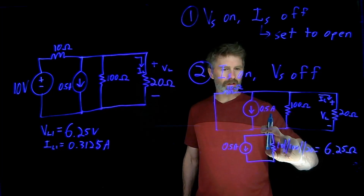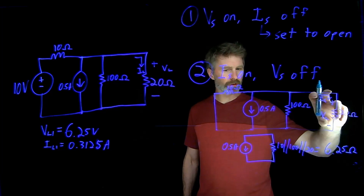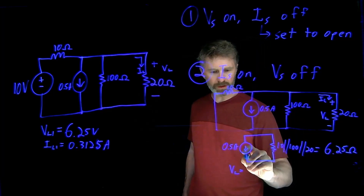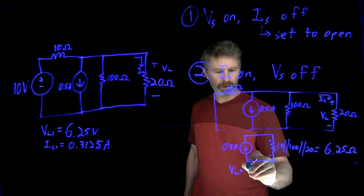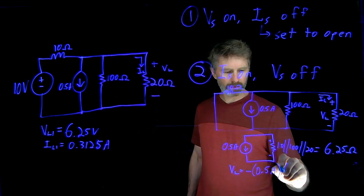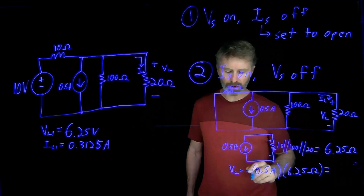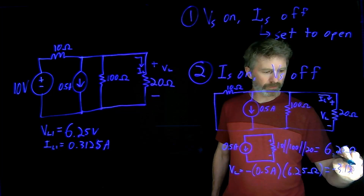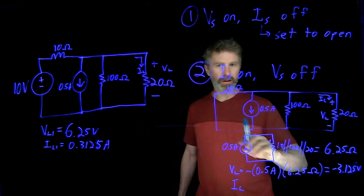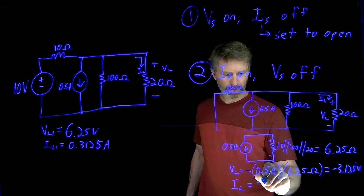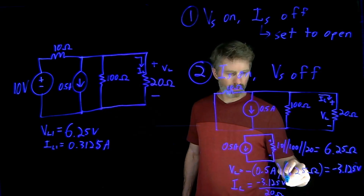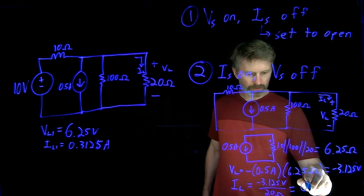This parallel combination includes the 20 ohm resistor, so whatever voltage we calculate across this parallel combination is the voltage across the 20 ohm load resistor. The polarity is defined one way, but our current source is going the other way, so VL2 equals negative 0.5 amps times 6.25 ohms, which works out to negative 3.125 volts. The current direction is also reversed from our definition, so IL2 equals negative 3.125 volts over 20 ohms, which gives 0.156 amps.